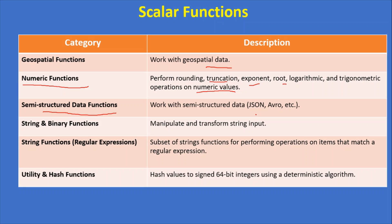Semi-structured data functions work with semi-structured data like JSON, Avro, Parquet, and XML. There are three types: array, object, and variant data types. String and binary functions manipulate and transform string input. Regular expression functions are a subset of string functions for performing operations on items that match a regular expression.